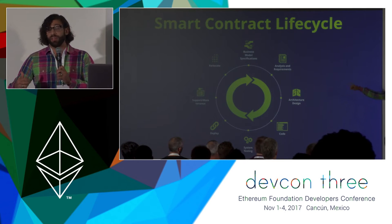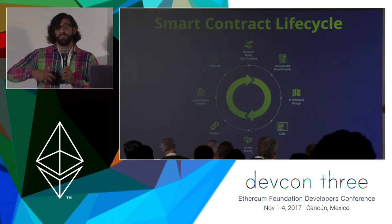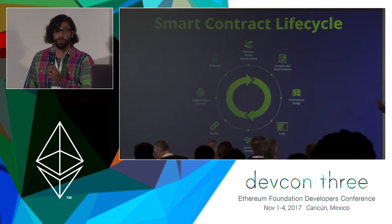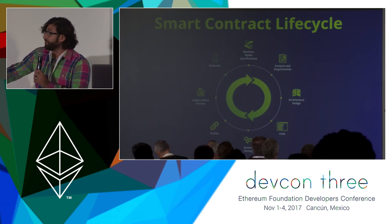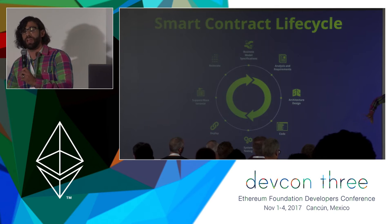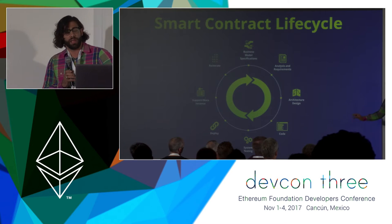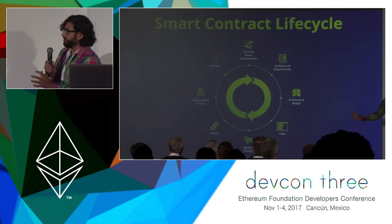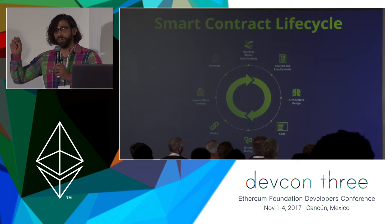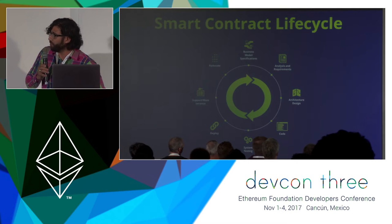Traditional software development allows us to just add features, upgrades, fix bugs, and really just deploy it again. Here we have to create a new smart contract to fix anything or to upgrade it. And so that adds to the smart contracts that are retired, but they're never really retired. So we have a lot of them on the network.